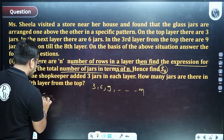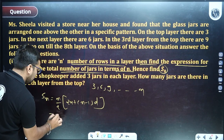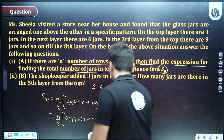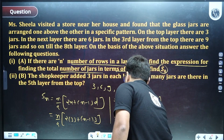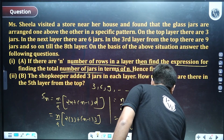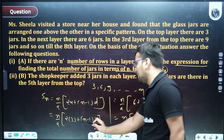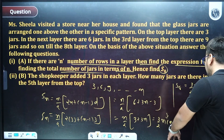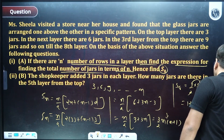Total number of jars means Sn. Using Sn = n/2 × [2a + (n−1)d], with a = 3 and d = 3: Sn = n/2 × [6 + 3(n−1)] = n/2 × [3 + 3n] = (3/2) × n(n+1). This is the expression for Sn. For S8: S8 = (3/2) × 8 × 9 = 3/2 × 72 = 108 jars total.